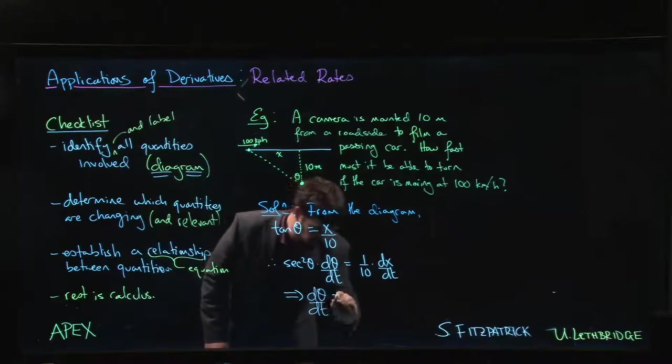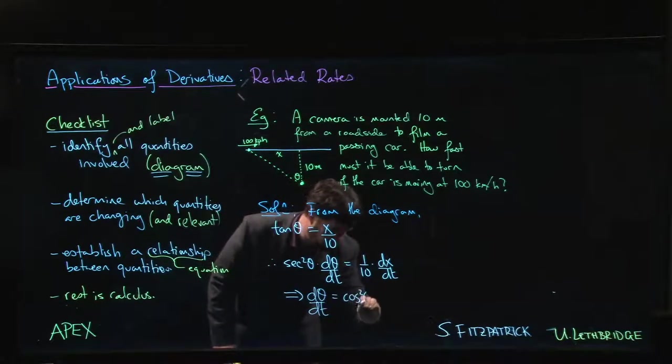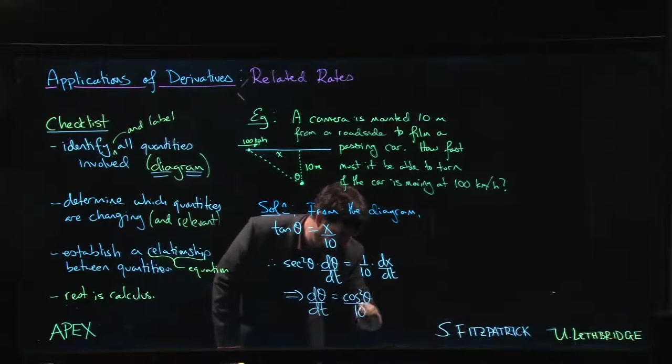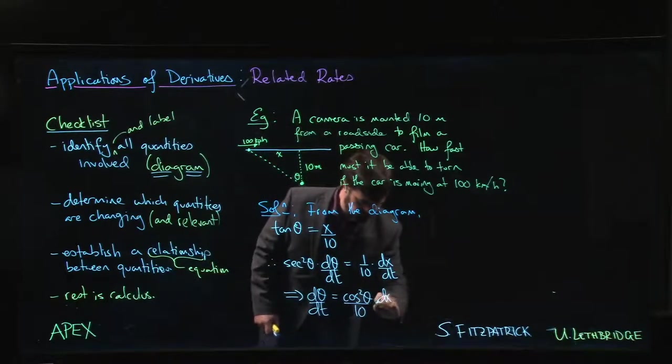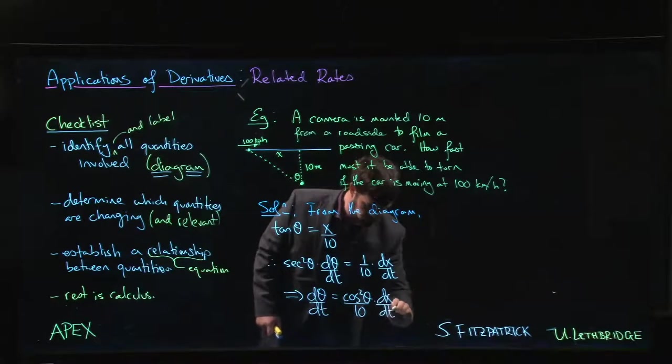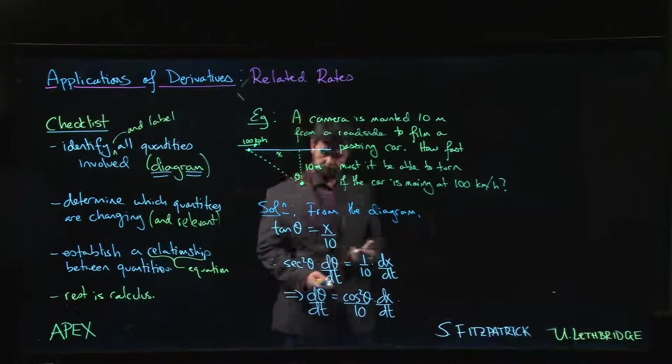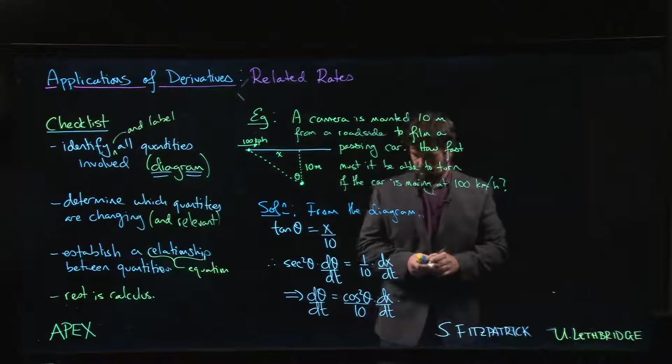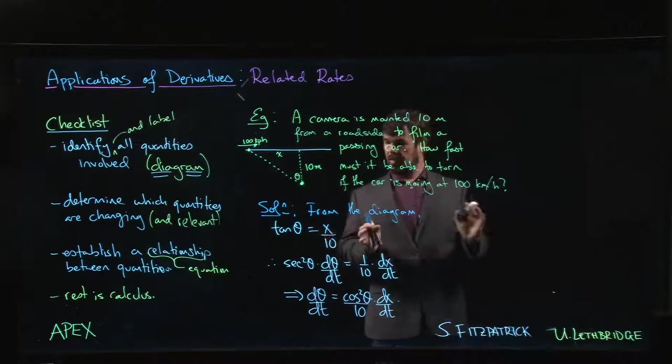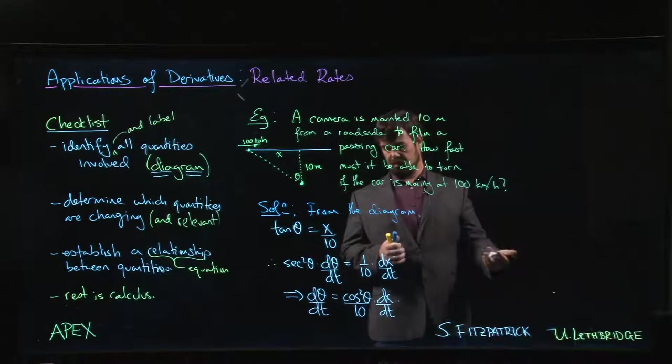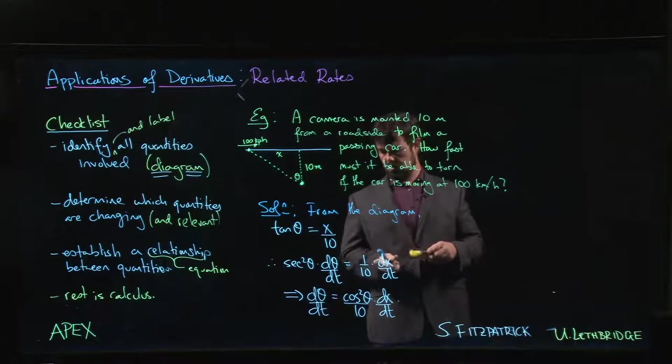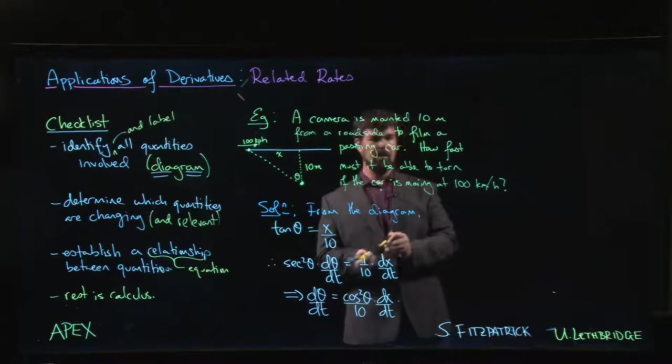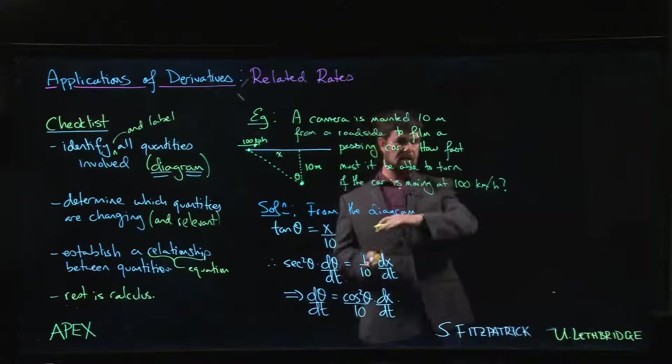Secant squared is 1 over cos squared, so this gives me dθ/dt is cos squared θ over 10 times dx/dt. Now we want to put our quantities in and see if we can get this to work out.